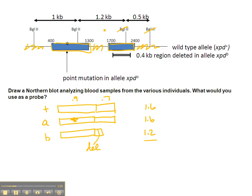When we run the gel, we need a probe that will hybridize to these fragments, so we have to consider where to place that probe. You can place the probe anywhere within an exon — that works fine. You cannot place it within an intron because that's not present in the RNA. And it would not be helpful to place it within the deletion region because that will not hybridize to the deletion allele.